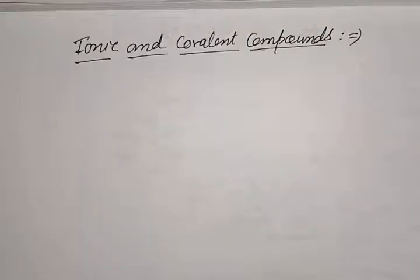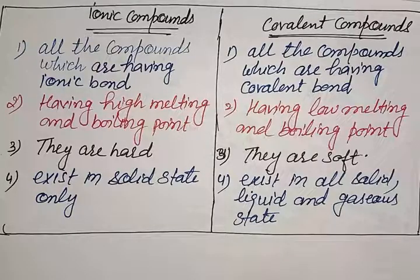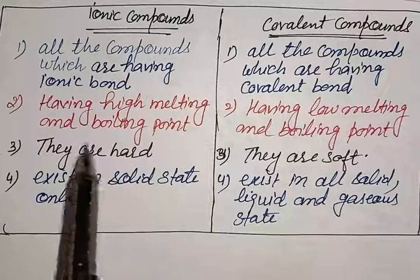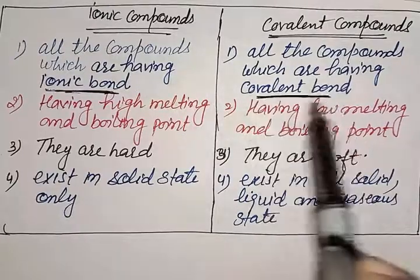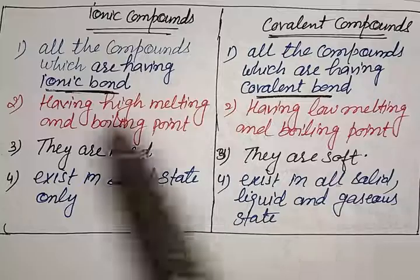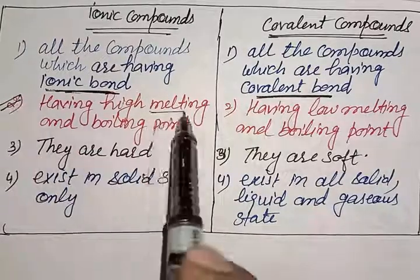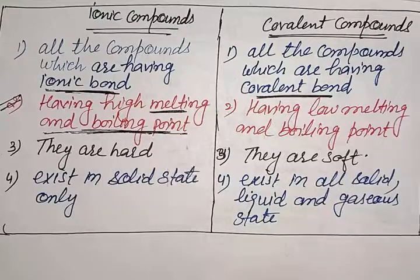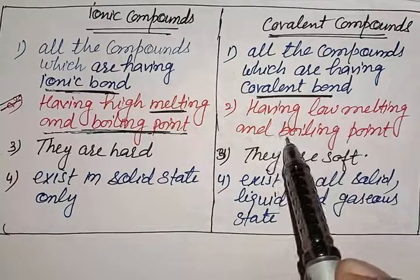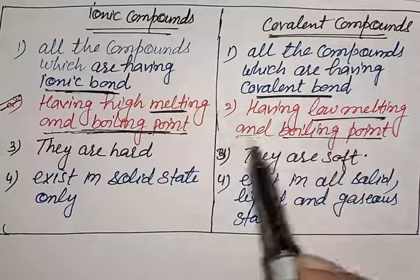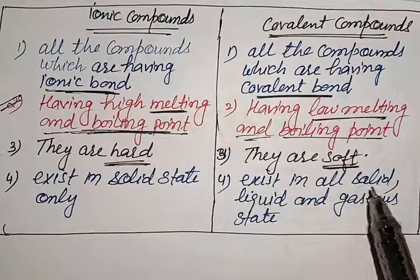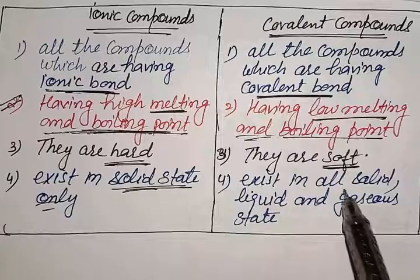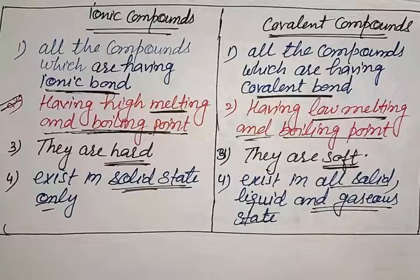Next, let's look at the differences between ionic and covalent compounds, which are important for reasoning questions. Compounds having ionic bonds are called ionic compounds; compounds having covalent bonds are called covalent compounds. Ionic compounds have very high melting and boiling points, while covalent compounds have low melting and boiling points. Ionic compounds are comparatively harder; covalent compounds are comparatively softer. Ionic compounds exist in the solid state only, while covalent compounds exist in solid, liquid, and gas states.